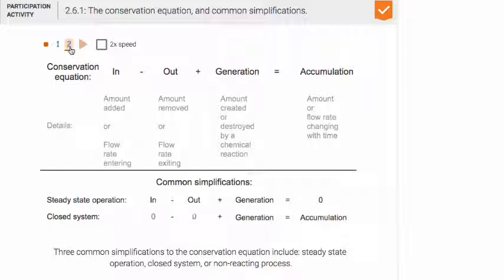And then in a closed system, what's generated is equal to what's accumulated, and in a non-reactive process, nothing is generated. So you just have in minus out equals what's accumulated.